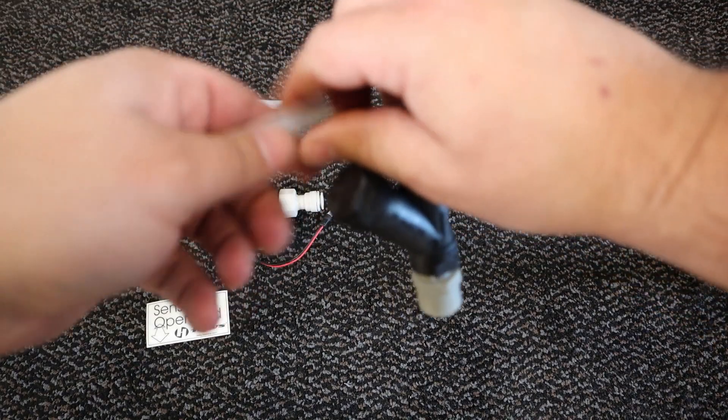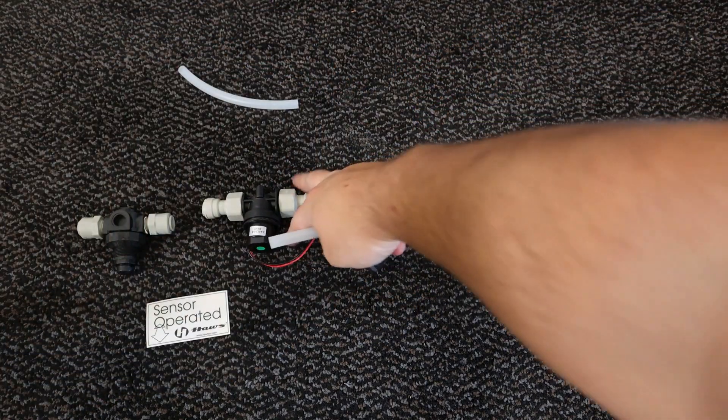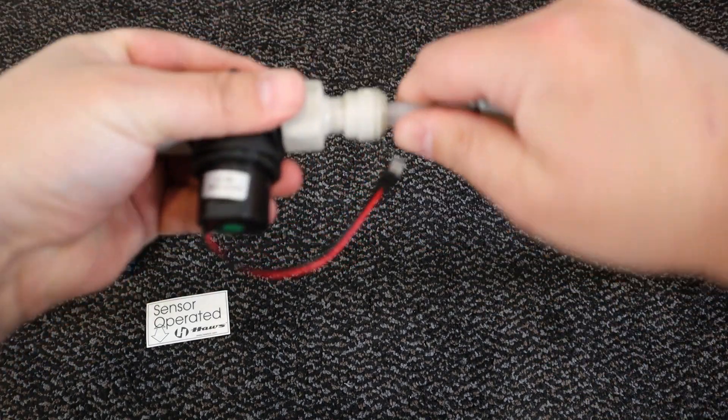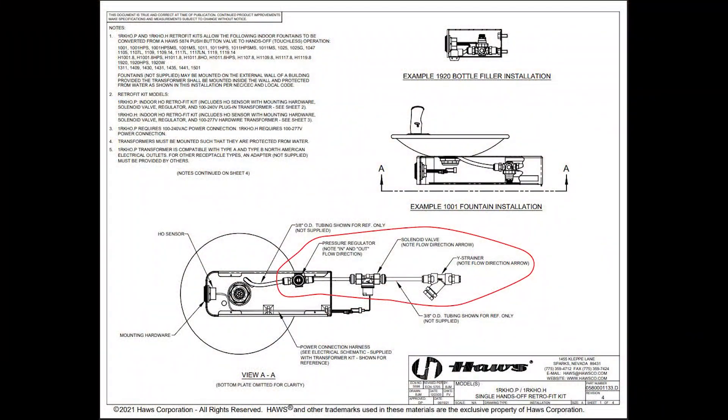Then, assemble the Y strainer, solenoid valve, and regulator valve using 3⅛ inch OD tubing in the order specified on page 4 of the included installation operation and maintenance instructions as seen here.